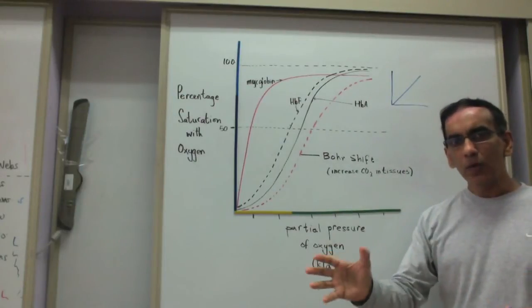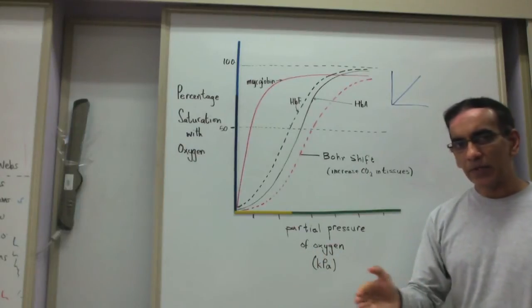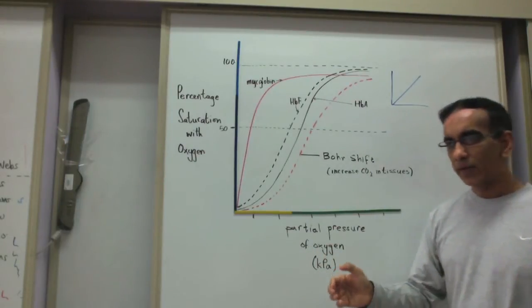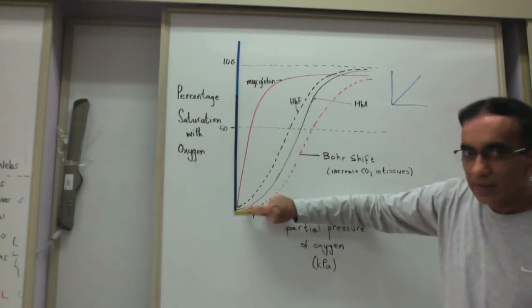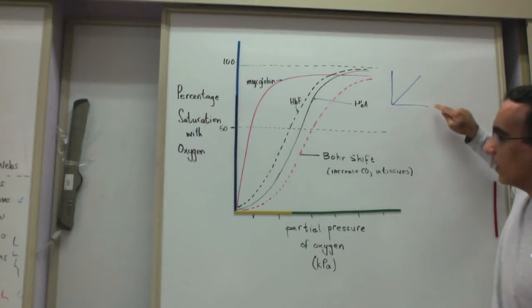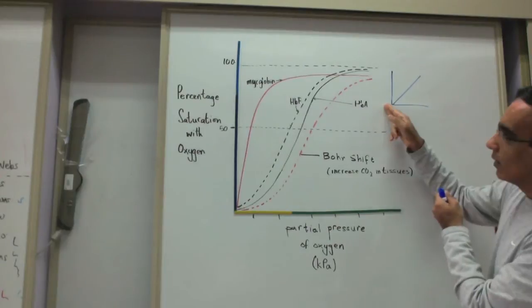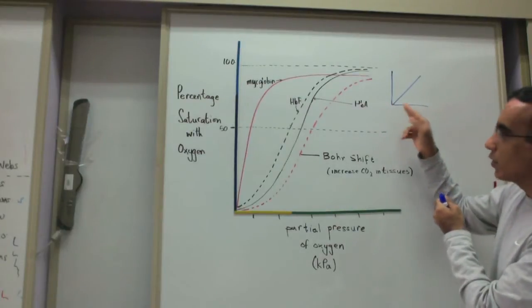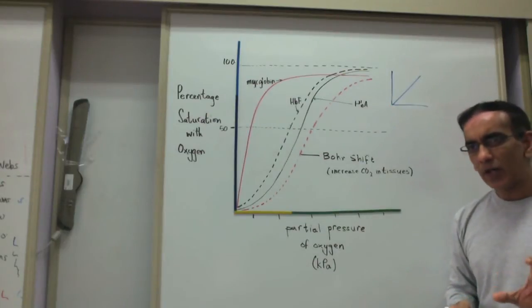Given what you know about the structure of hemoglobin and how it binds to oxygen, can you account for the fact that the curve takes on this shape as opposed to having a straight line relationship where oxygen concentration increases and there's a direct relationship with the percentage saturation?